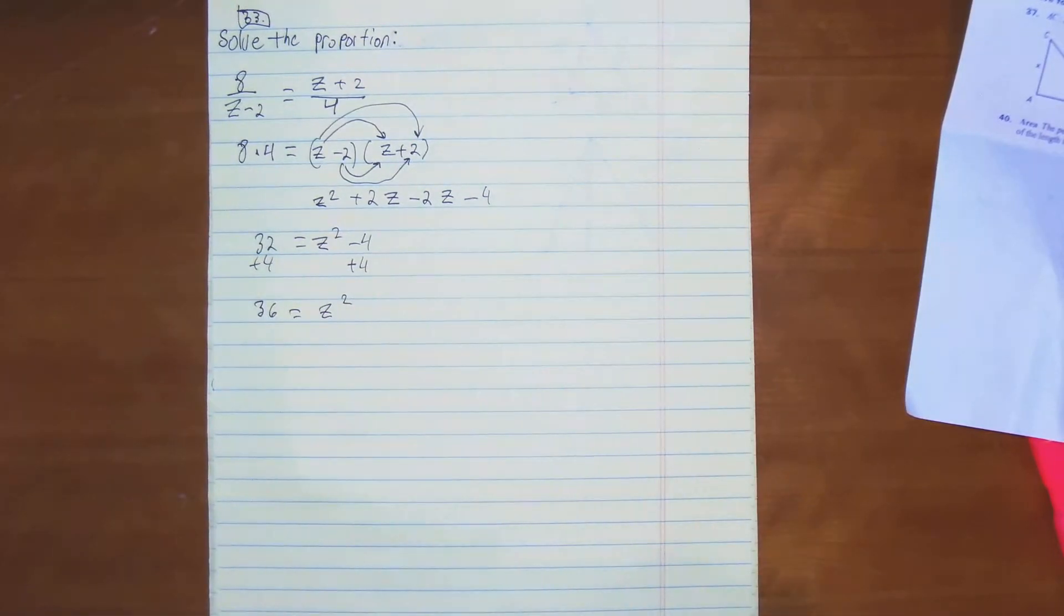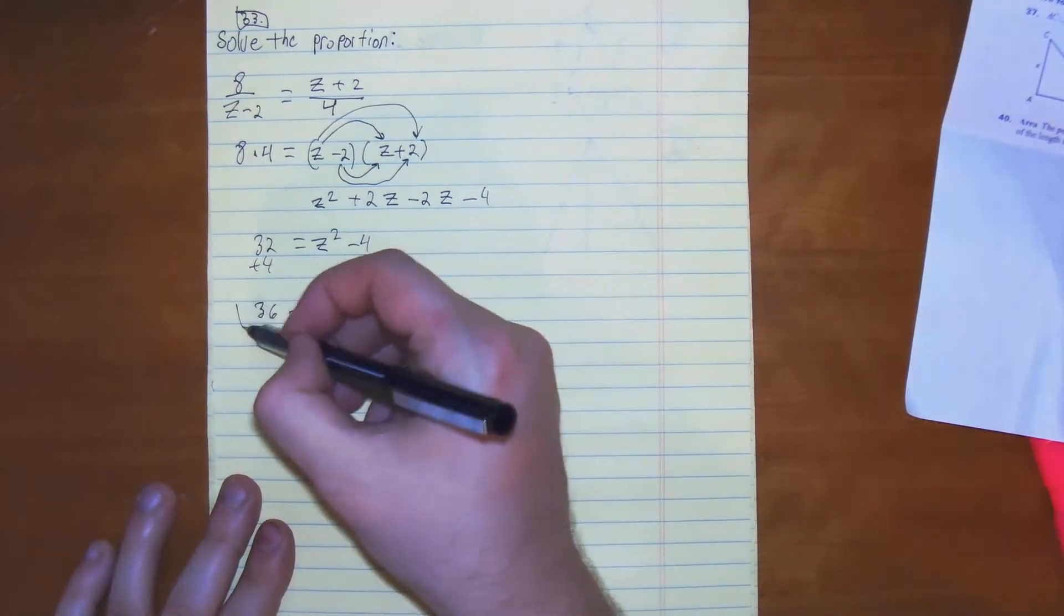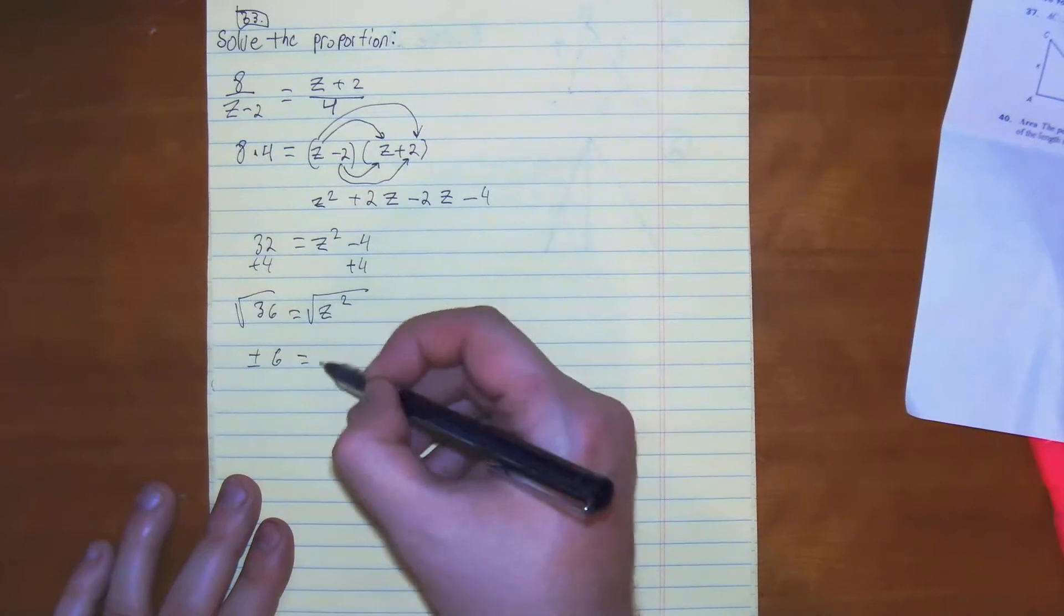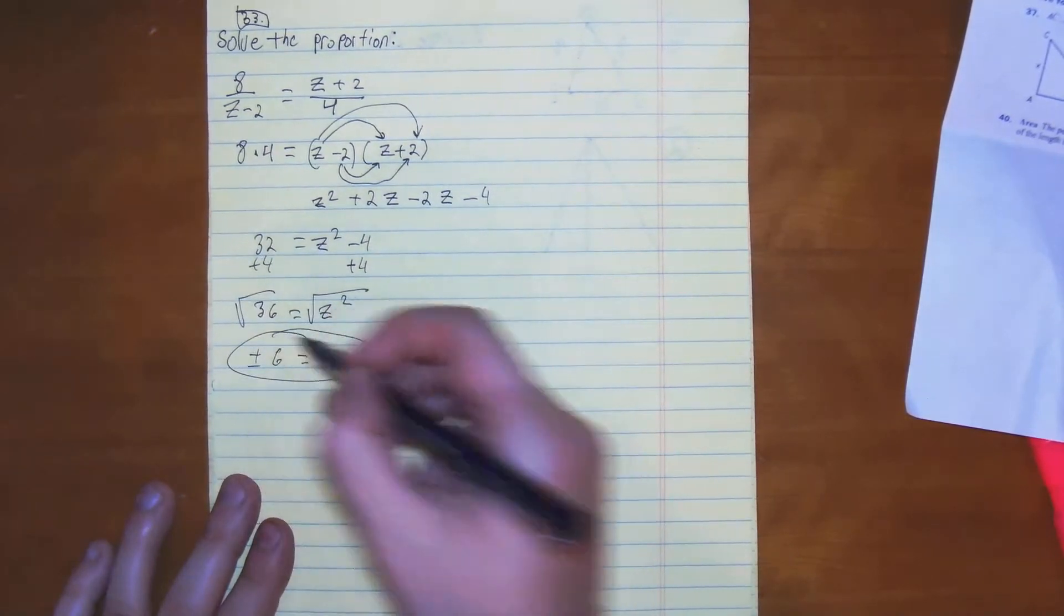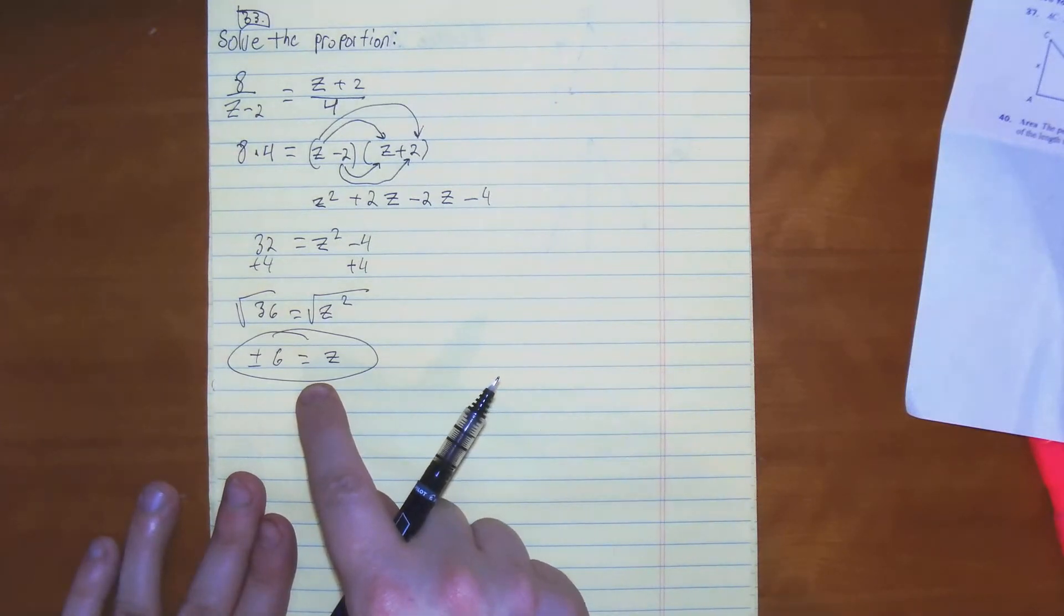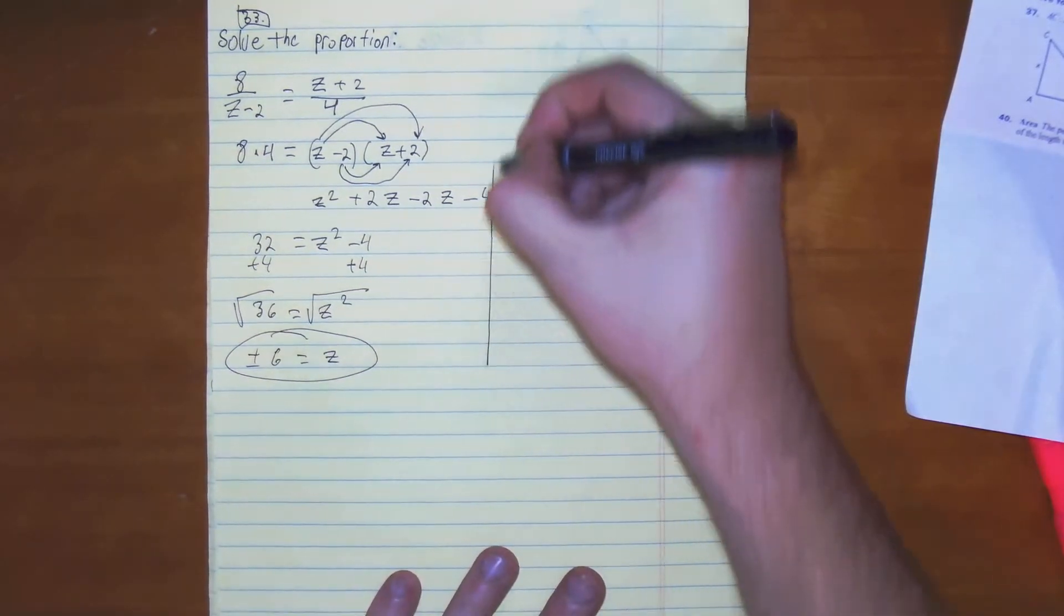To figure out our answer, we square root both sides. You get plus or minus 6 equals z. Plus or minus could be the answer, but we need to check if our answer will be a real solution. So let's check our work.